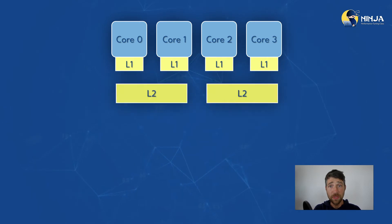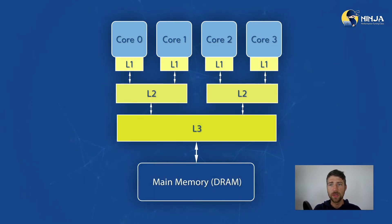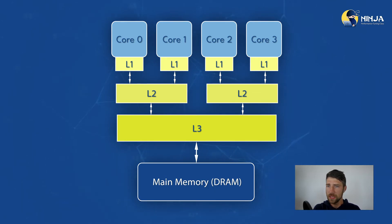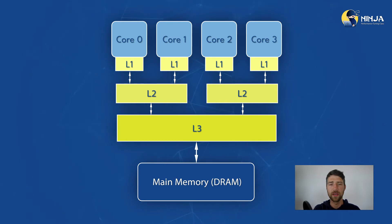Remember that CPUs execute instructions really fast. In order to maximize the utilization of the CPU's computing capabilities, it needs to be fed with the right data at the right time. This is the motivation for caching the data and introducing additional layers in the memory hierarchy.